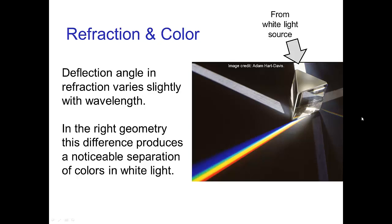One more property of refraction is that the deflection angle varies slightly with the wavelength of light, and different wavelengths are perceived as different colors. It's not a large effect, but with the right geometry you can notice a significant separation of the colors of white light, as seen from a prism dispersing and revealing the spectrum.